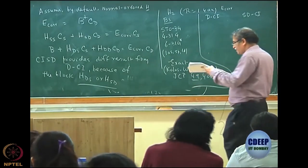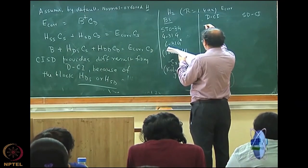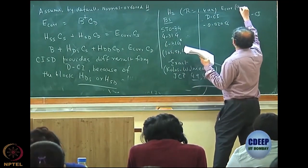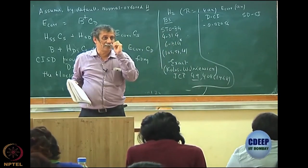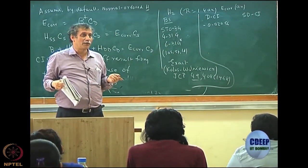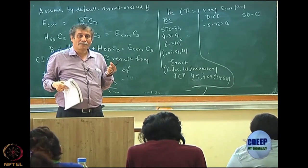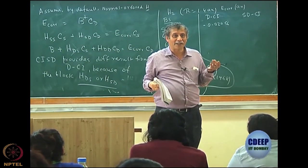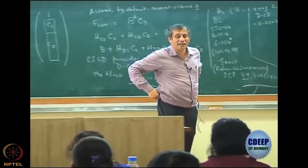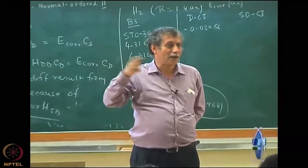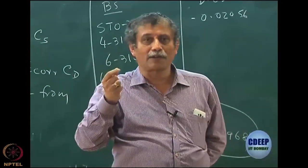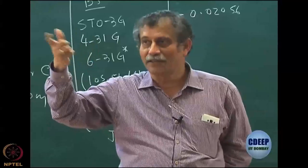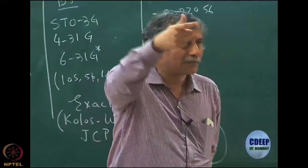We are presenting only correlation energy. So DCI gives −0.02056 — these are all in atomic units. One atomic unit (Hartree) is 27.2116 eV; half a Hartree is 13.65 eV for the hydrogen atom. One electron volt is approximately 23-point-something kcal/mol, and one atomic unit is therefore about 627 kcal/mol — 27-point-something times 23-point-something.